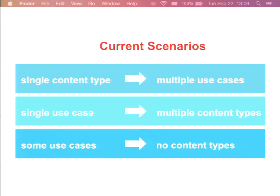What we see overall is that a single content type is often used for too many different use cases, each requiring different layouts, different permission structures, and different fields. At the same time, a single use case is often met by multiple different content types in different locations, which makes it really hard for users — especially newcomers and learners — to know which is the right place for the thing they are trying to do. And there are some user needs uncovered during research for which we don't even have specific content types right now.